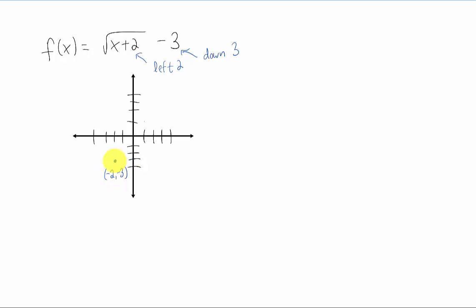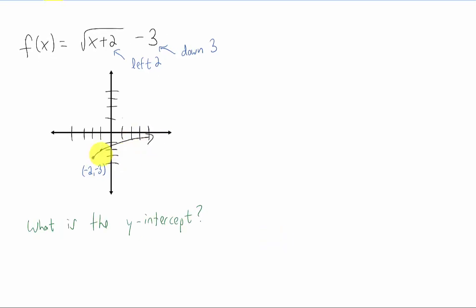Just like a regular square root function now, it's going to go up 1 and over 1, and it's going to curve kind of like that. So we have a basic idea of what this graph looks like.